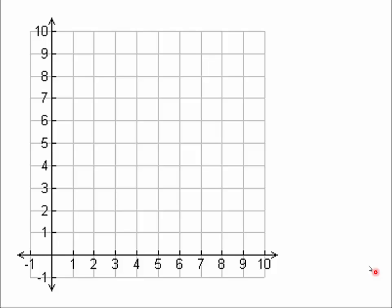Time to talk about vectors. A vector is a directed line segment, like this one. Notice it has a starting point — we call this the initial point. Here I've labeled this point P, and it's at the coordinate.